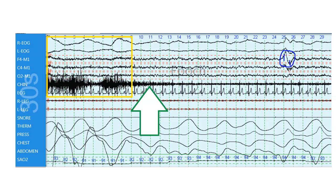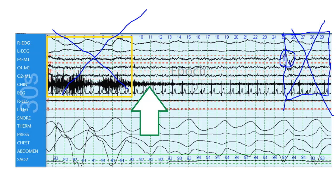So how do we actually come to a conclusion? Well, we can rule out that it is wake because there's only nine seconds of the epic made up of wakefulness. We do not see any spindles, and so really the first view of possible stage two comes at second 25. Only five seconds of the epic are made up of stage N2, so it can't be N2 — we cannot score it as N2. That means the remaining part of the epic, about 14 seconds, is stage N1. So we would actually score this as stage N1.